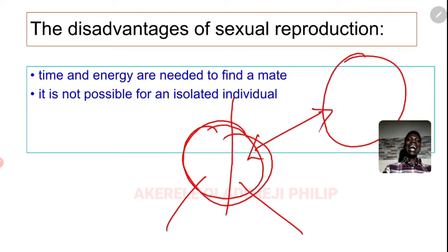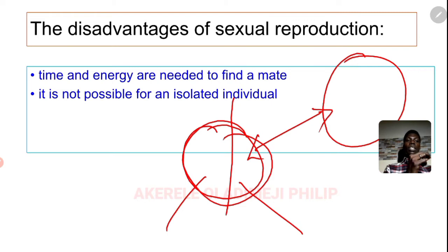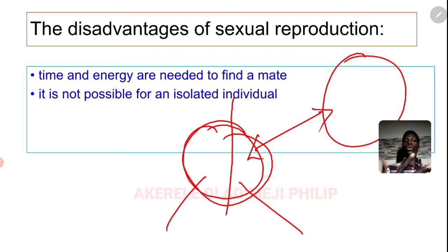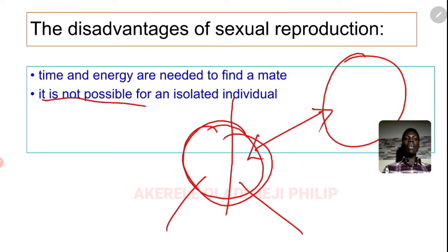For most organisms, sexual reproduction demands that they look for a mate. It is not possible for an isolated individual to reproduce — if a male organism is isolated it cannot reproduce, and same for a female, unless it can carry out parthenogenesis, which means self-reproduction. The Komodo dragon, I believe, can carry out parthenogenesis when isolated — so generally if an organism is left alone it can't reproduce by itself.